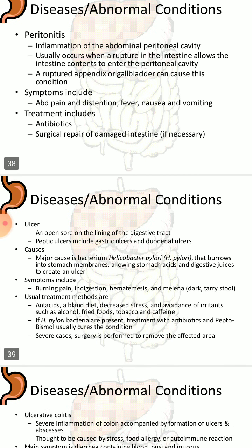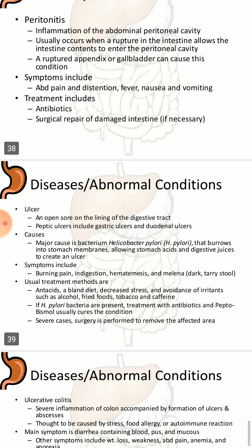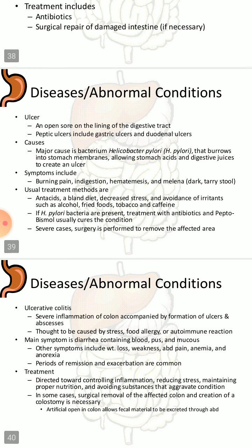Peritonitis is inflammation of the abdominal peritoneal cavity. It usually occurs when a rupture in the intestine allows intestinal contents to enter the peritoneal cavity. Symptoms include abdominal pain and distension, fever, nausea, and vomiting. Treatment includes antibiotics and surgical repair of the damaged intestine.